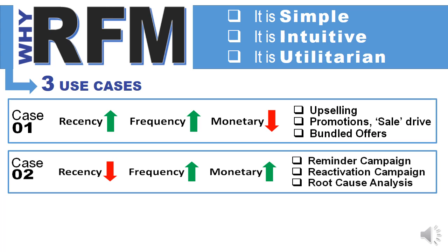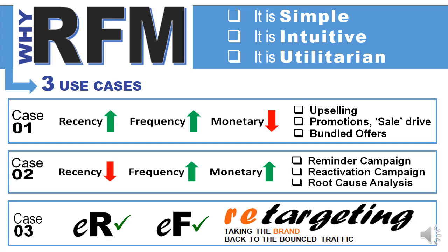Case two: frequency is good, monetary is good, but the customer hasn't been seen recently — recency is not good. What do you do? You run a reminder campaign, a reactivation campaign. And if you find that a lot of customers are missing suddenly, then there is something wrong — do a root cause analysis. Case three: in the click market, E-R is very good and E-F is very good, but the customer has not yet started buying. What do you do? The classic modern game of retargeting — take the brand back to the bounced traffic. Retarget the customer.